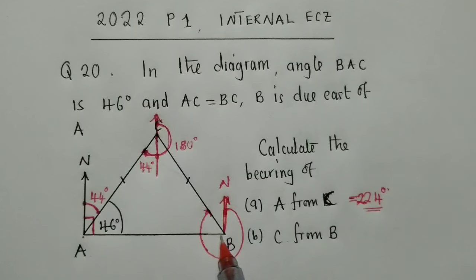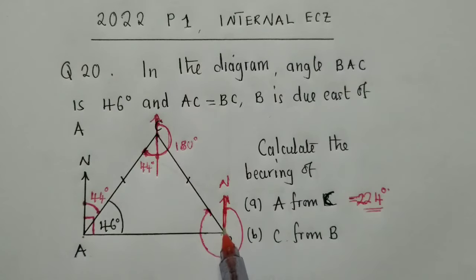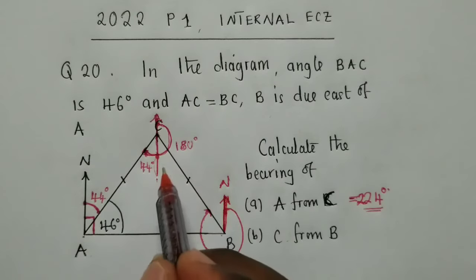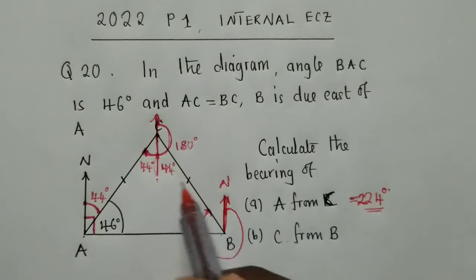Now, to find this, what we can do, we still need to use property of parallel lines. So, this line and this line, they are parallel. This is 44 degrees.